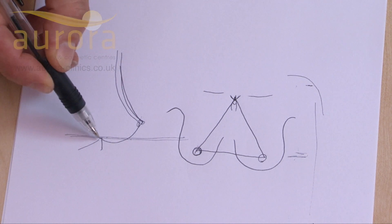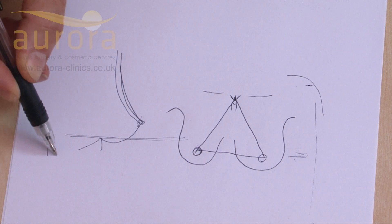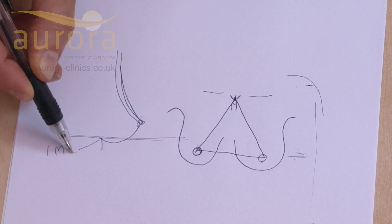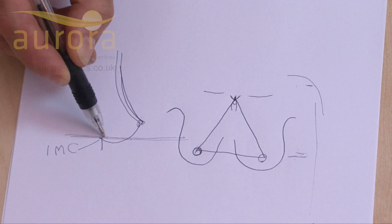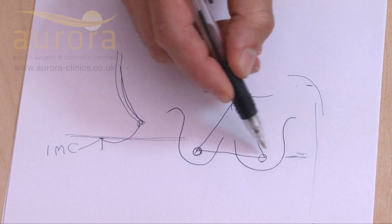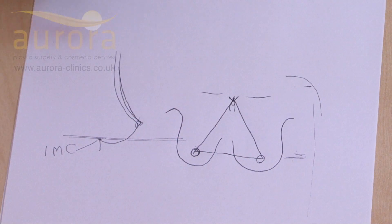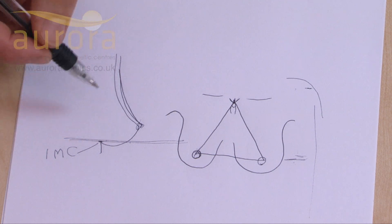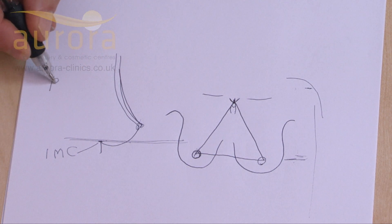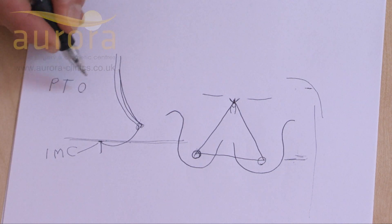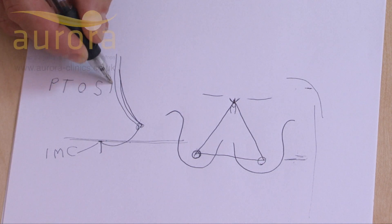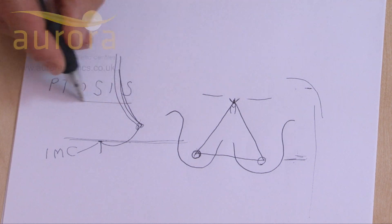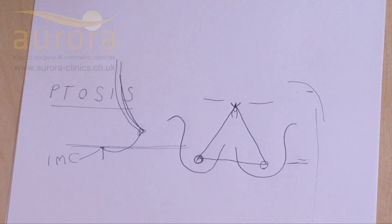This is the breast fold, which is called the inframammary crease, I-M-C. So that's the crease, and the crease will be here behind the breast. So this is no droop. And the medical word for droop is ptosis. That's P-T-O, S-I-S, ptosis. That's breast droop.